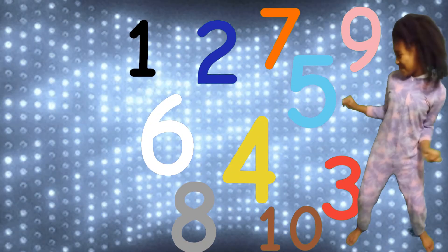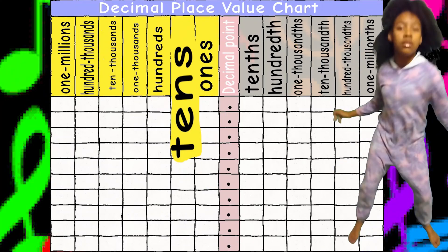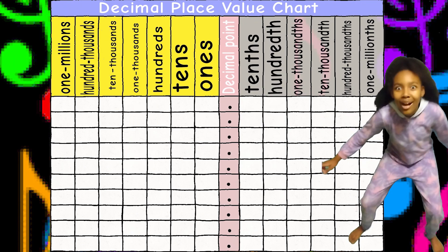Place value, place value. That's my point. Place value. Ones, tens, hundreds, thousands. Place values.